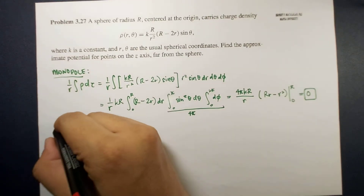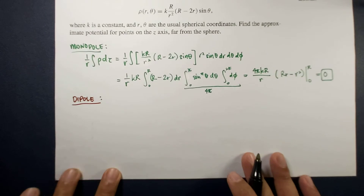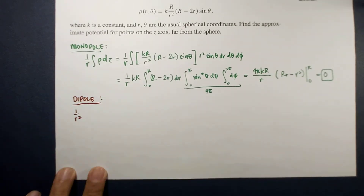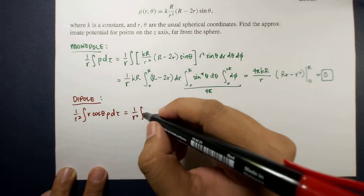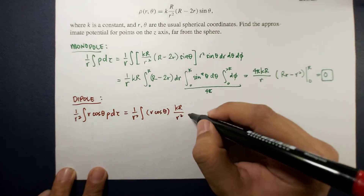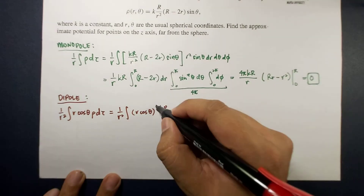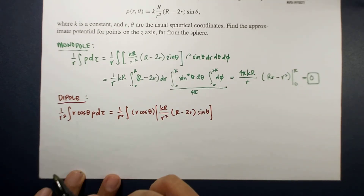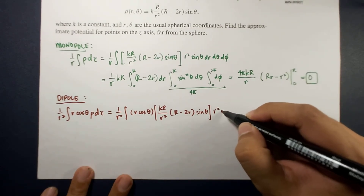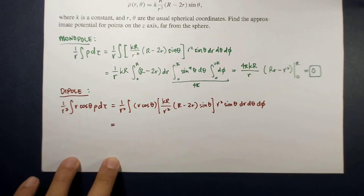For the dipole contribution we have 1 over r-squared times the integral of r cosine-theta times rho d-tau. Substituting rho, this is 1 over r-squared times r cosine-theta times k times r over r-squared times (r minus 2R) times sine-theta, times r-squared sine-theta dr d-theta d-phi. The r-squared terms cancel, and we separate the integrals.